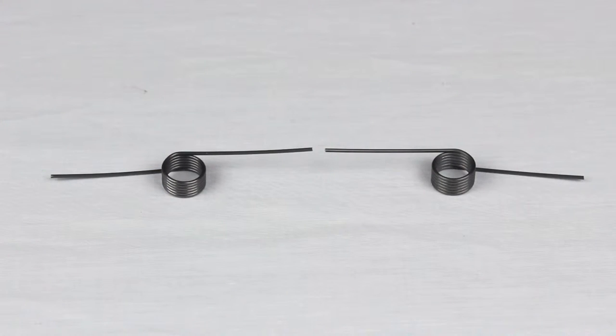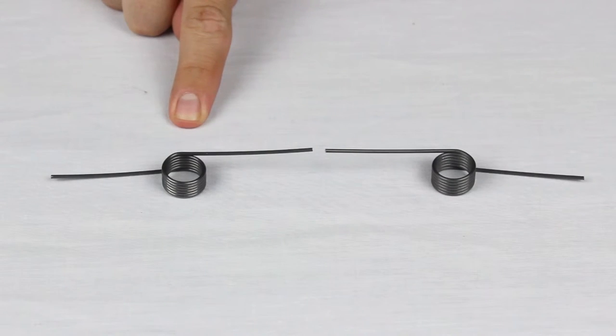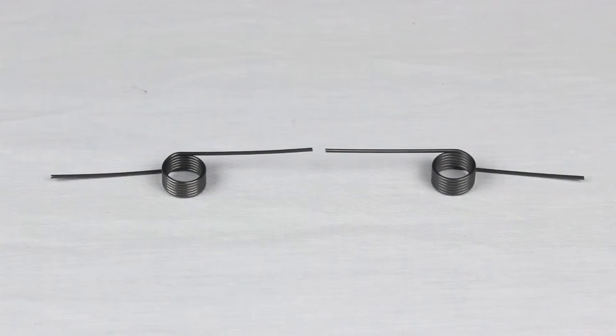The last step is to determine the direction of wind. This part is important because it affects how the spring will rotate in use. There are two types, right-hand wind and left-hand wind. Notice the way the springs are coiled.